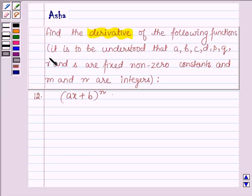of the following functions. It is to be understood that A, B, C, D, P, Q, R, and S are fixed non-zero constants and M and N are integers. The twelfth one is (AX + B) raised to the power N.